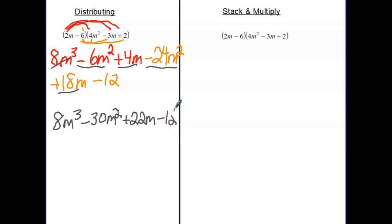Same problem. Now I'm going to just cross this guy out and bring him down. 2m minus 6. Draw my line. Now I'm multiplying. Negative 6 times 2 is negative 12. Negative 6 times negative 3m is positive 18m. Negative 6 times 4m² is negative 24m².